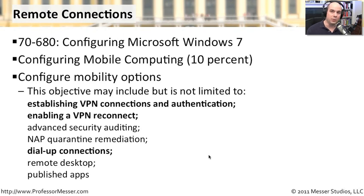In this video, part one, we're going to focus solely on connecting. We're going to look at the different technologies used for authentication and for doing virtual private networks, and see what it takes inside of Windows 7 to get that all working.